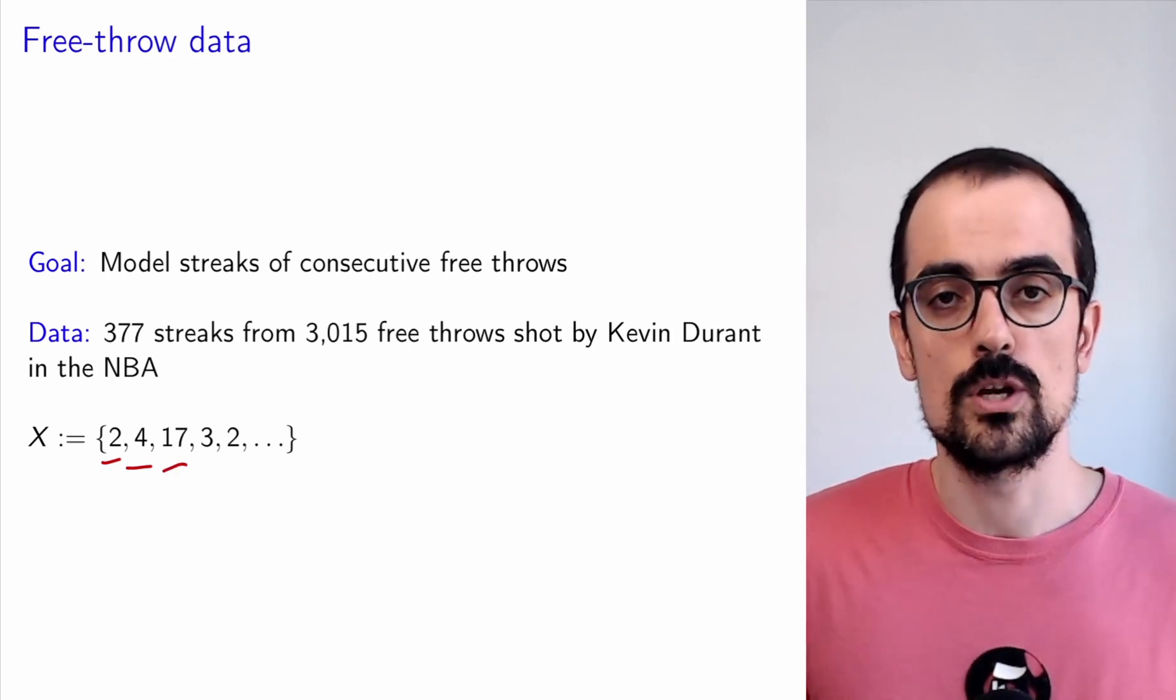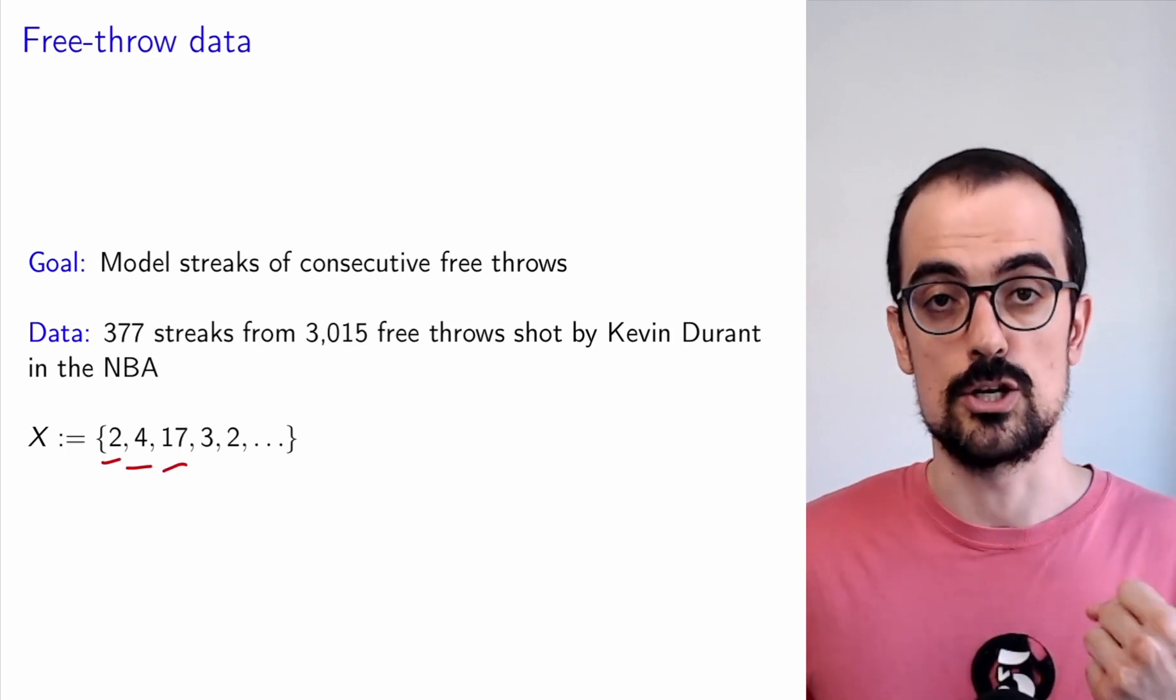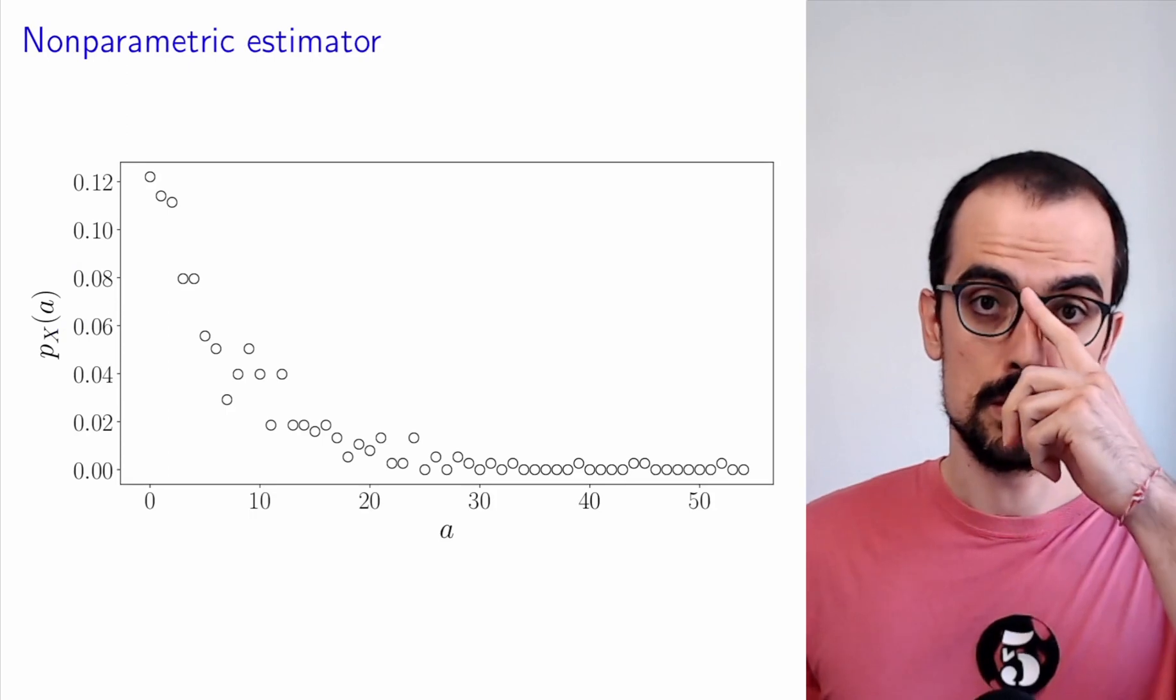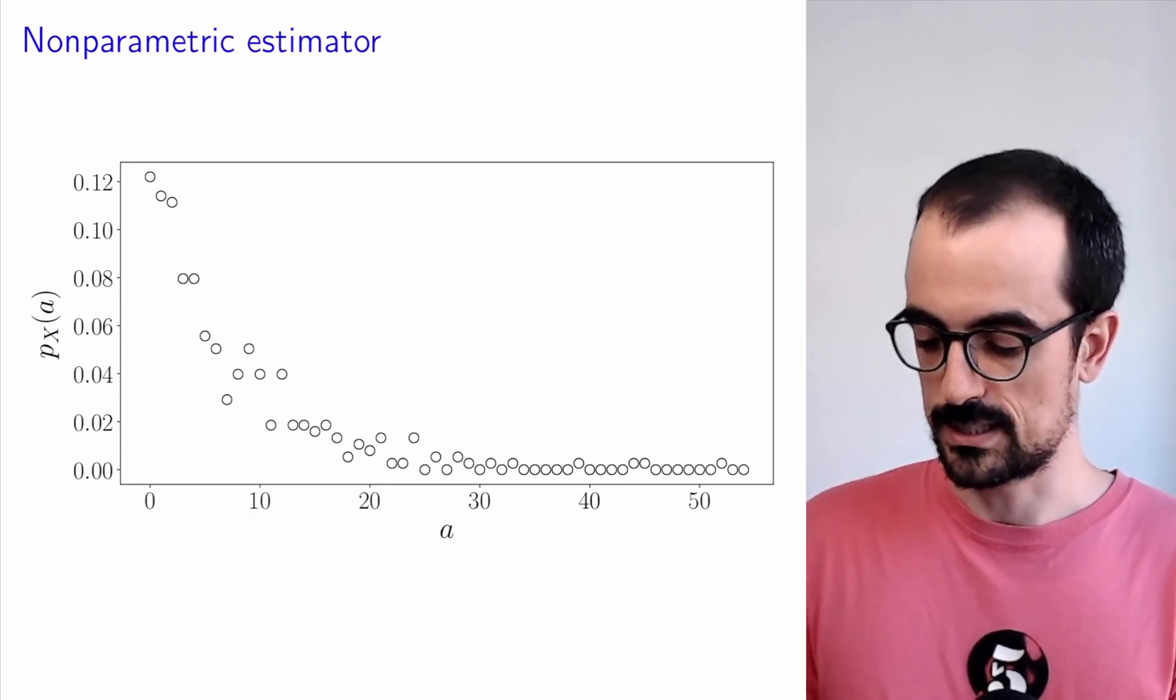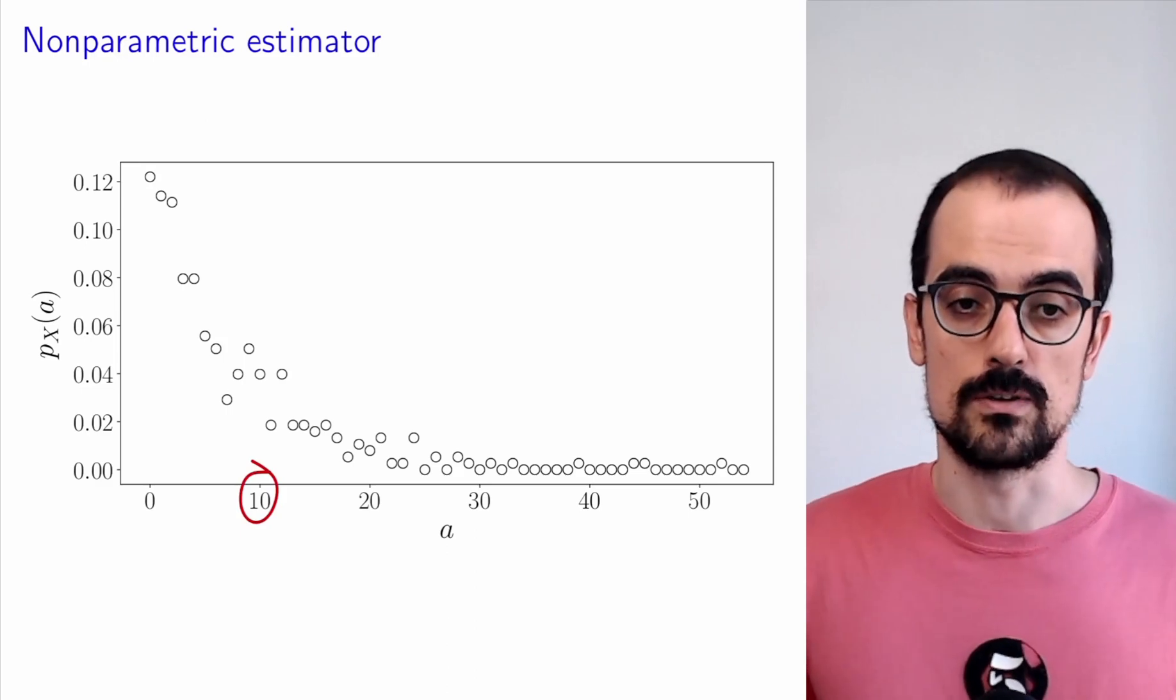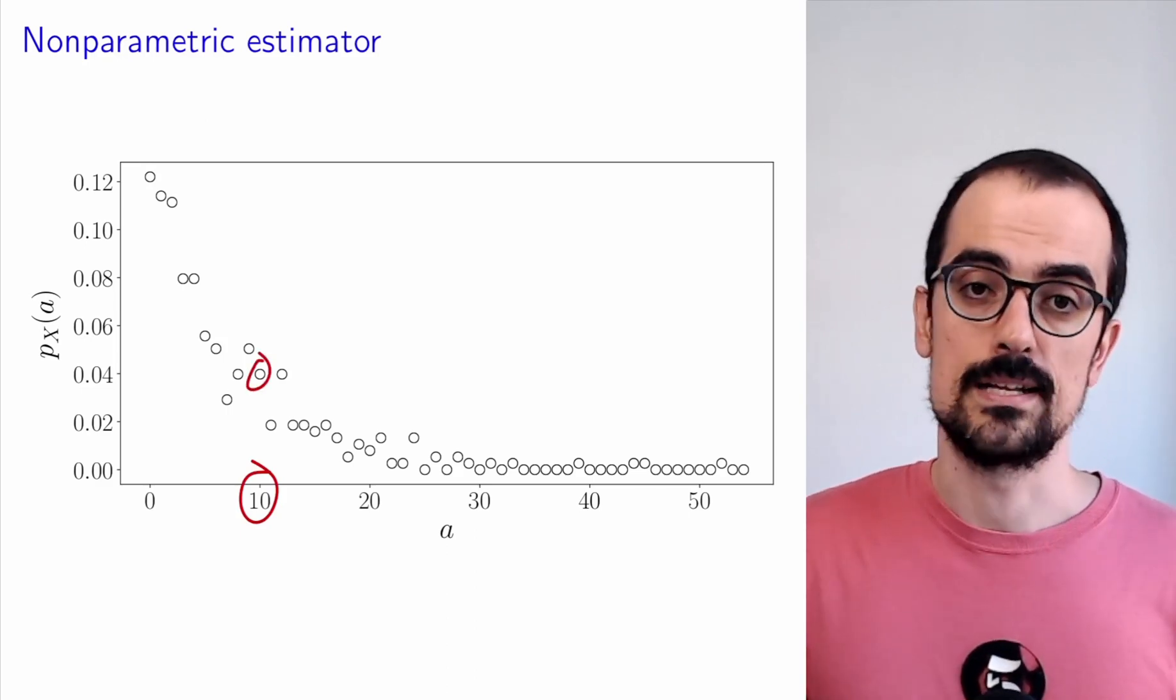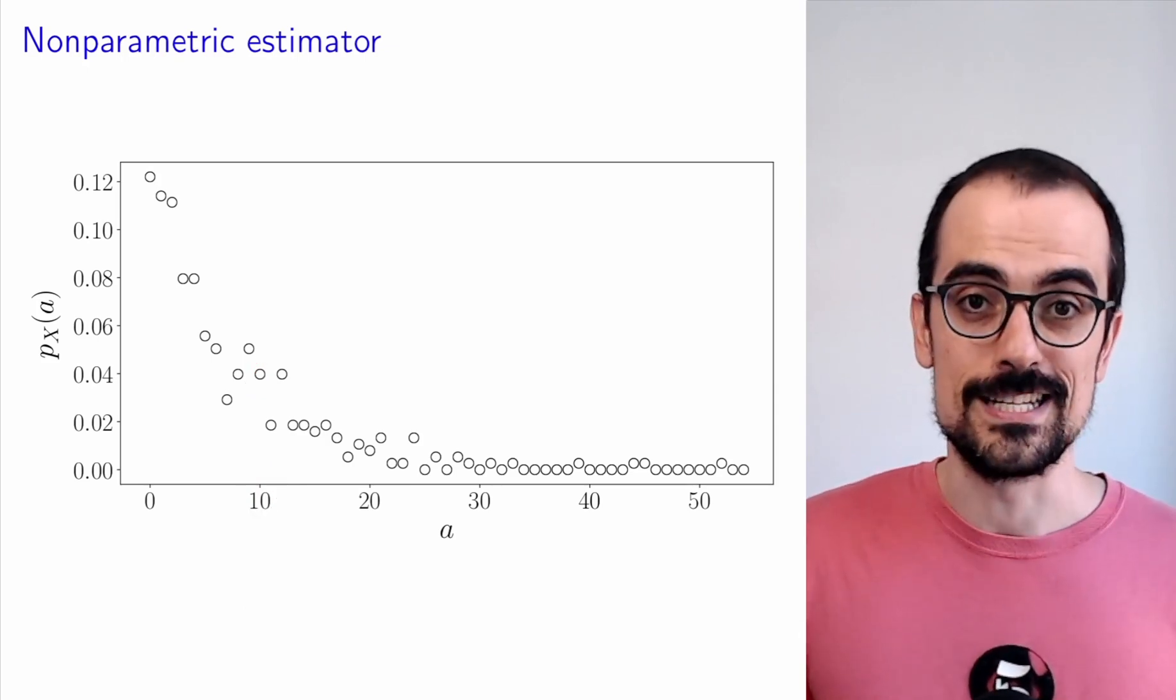In a previous video we talked about how you would estimate the PMF using a non-parametric estimator, which would just be the empirical probability of each streak length. For example, for 10 you would look at how many streaks have length 10 and divide by the total number of streaks. The problem is that this looks very noisy.